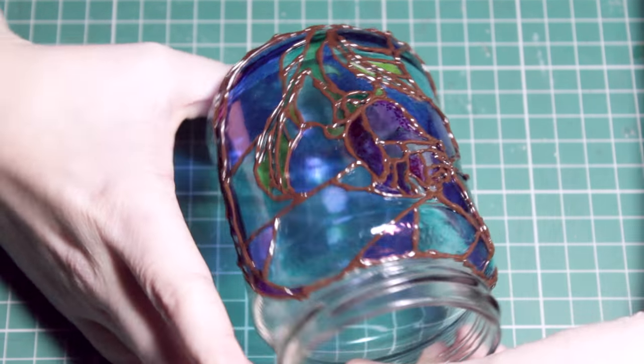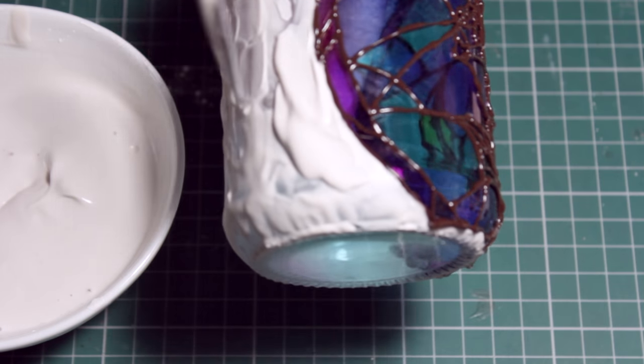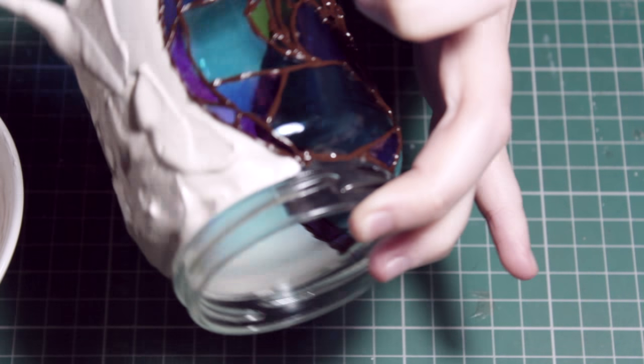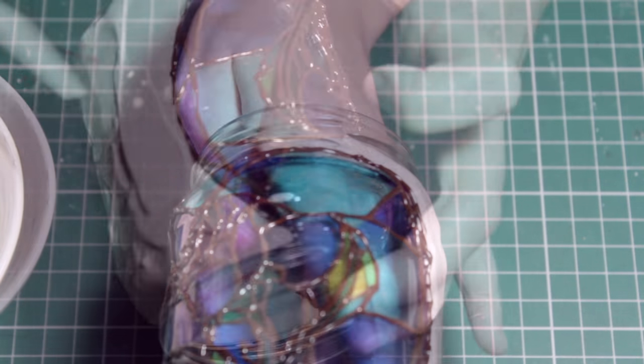If you get any of those glue webs don't worry, just take some tweezers and pull them away so that you can neaten everything up. And then after that I'm going to mix some plaster of Paris - this is stone powder, the kind of stuff that you use for face casting.